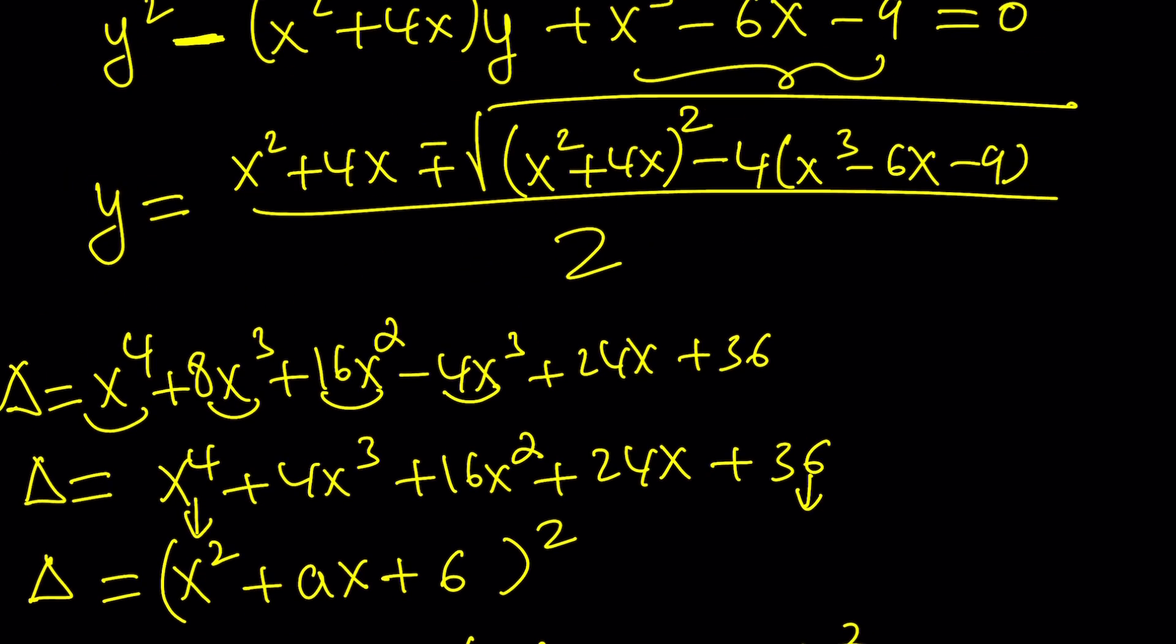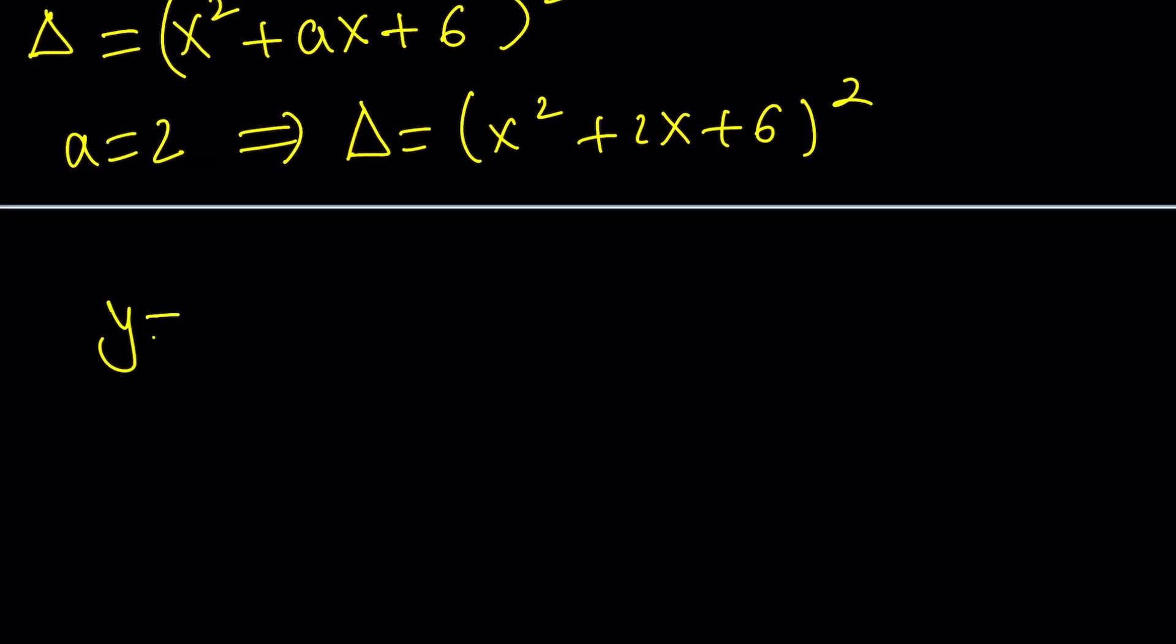So now we have the discriminant. We can just plug it in. And y equals x² + 4x with a plus minus sign, the square root of the discriminant, which is x² + 2x + 6, divided by 2. Now, why are there two solutions? Do you know why?